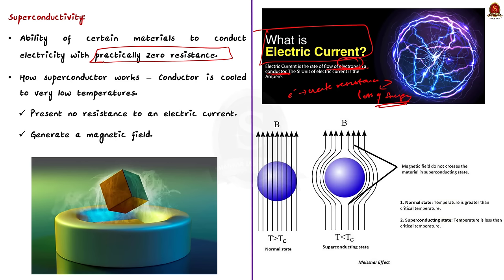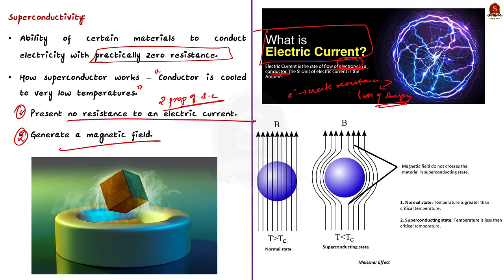Let us understand how superconductivity works. A conductor serves as a carrier of electrons that move from one atom to another when voltage is applied, conducting electricity with little or zero resistance. When such normally conductive elements and compounds with electromagnetic properties are cooled to very low temperatures, they display two important properties: first, they present no resistance to electric current; second, they generate a magnetic field. The temperature at which the electrical resistivity of a material suddenly drops to zero and it changes from a normal conductor to a superconductor is called the critical temperature or transition temperature, which varies from material to material.